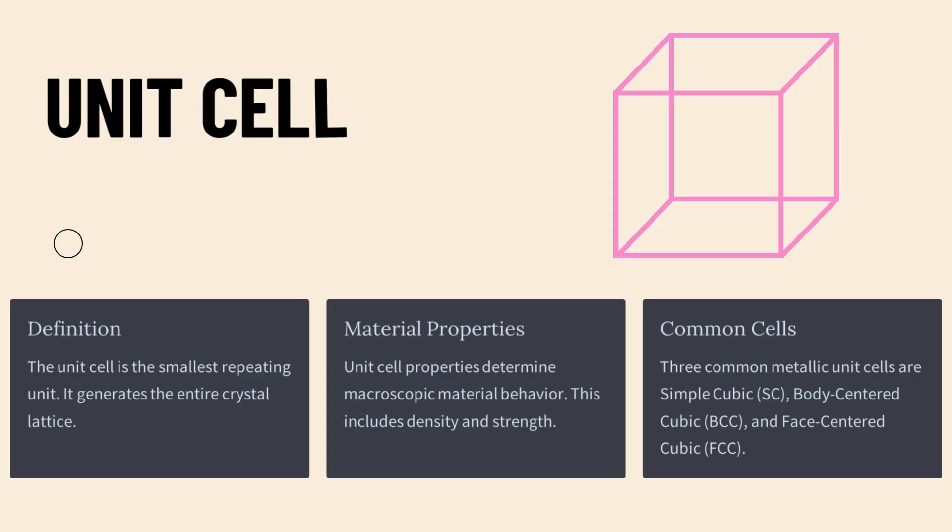First let's see, what is unit cell? The unit cell is the smallest repeating unit. It generates the entire crystal lattice. Three common unit cells are simple cubic (SC), body-centered cubic (BCC), and face-centered cubic (FCC) structures.